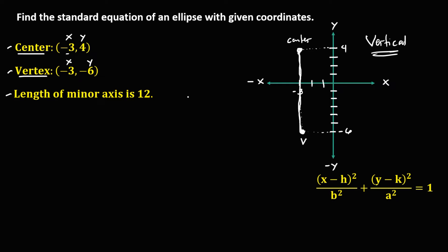To write the standard equation, we need to find the values for h, k, a squared, and b squared. Since the center of an ellipse is (h, k), therefore h is negative 3 and k is positive 4.